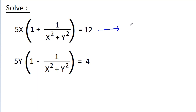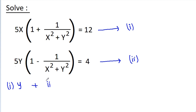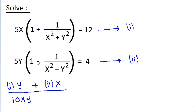We have two equations, equation 1 and equation 2, and two variables x and y. The first approach is by using elimination. If we multiply equation 1 with y and add equation 2 times x, then 5xy times 1 plus 5xy times 1 will be 10xy, and 5xy times (1 by x² plus y²) plus 5xy times (minus 1 by x² plus y²) will be 0, and on the right-hand side we get 12y plus 4x.